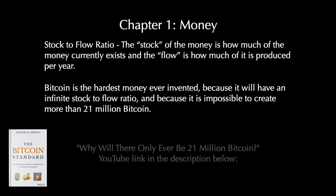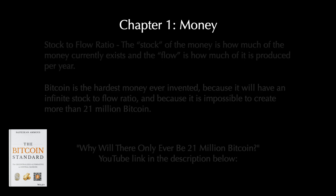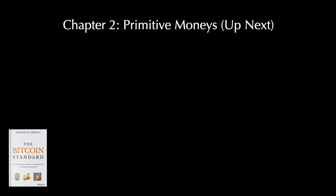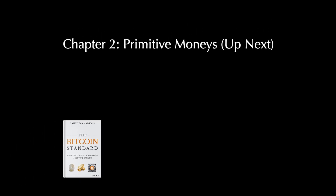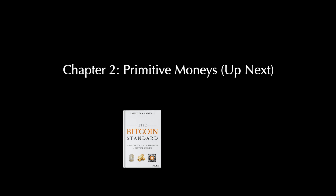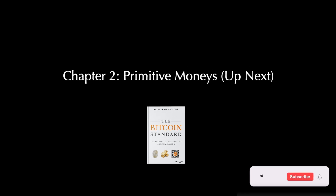Check out my previous video explaining why there will only ever be 21 million Bitcoin — the link is found below in the description. Also, be sure to watch the next video in this 10-part series, which will summarize Chapter 2 of the Bitcoin Standard. Chapter 2 is entitled Primitive Monies, and it is a fascinating look at primitive monies used around the world in ancient times and their similarities and differences to the modern fiat money system and Bitcoin.